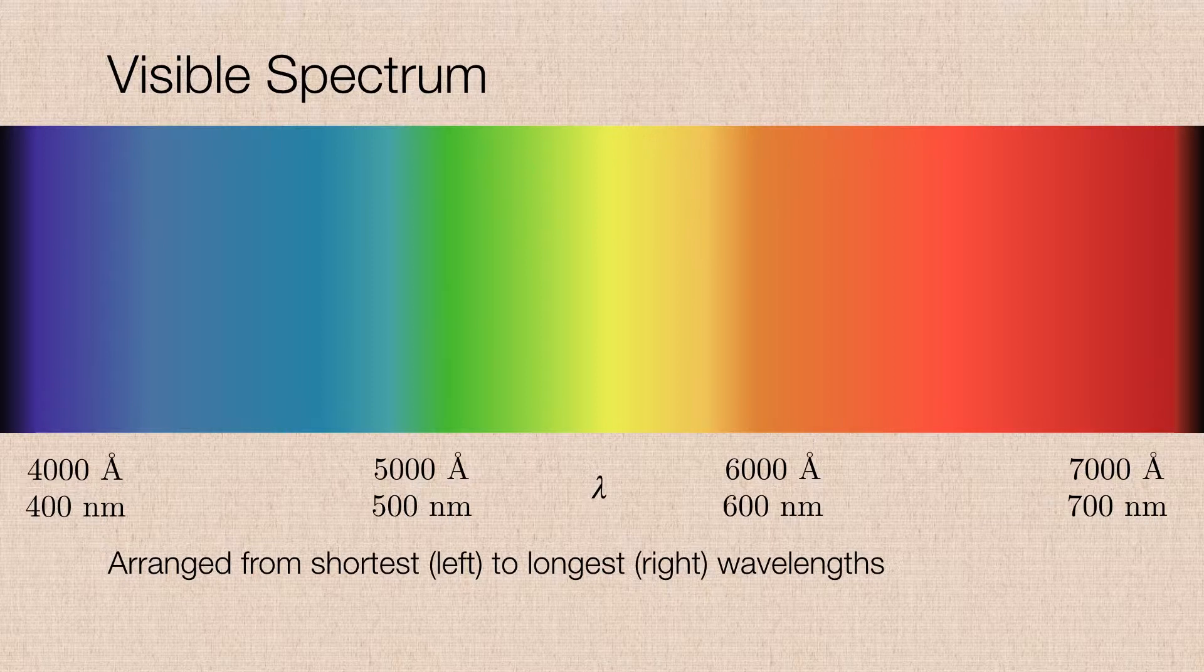At the other end of the spectrum, on the right-hand side, the deepest red gives way to black at about 7,000 angstroms or 700 nanometers. From this point forward, going further to the right, we have gone into the infrared, and from the leftmost part of the deepest violet, we go into the ultraviolet.